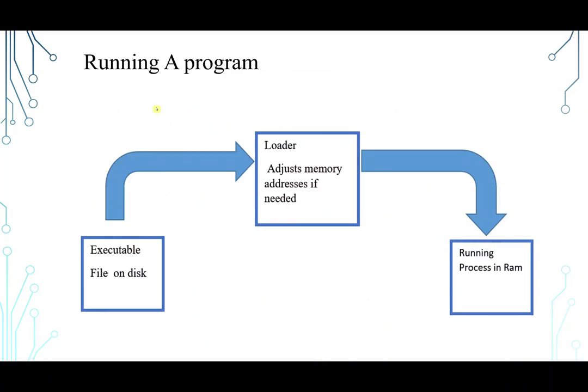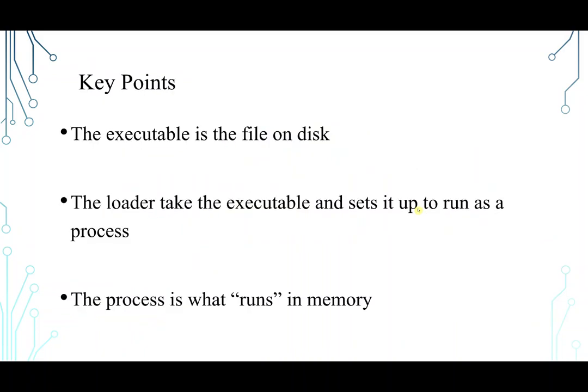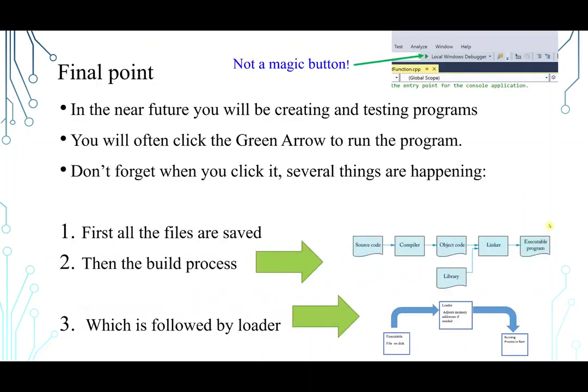Okay, having this chart is going to make it easier for you. So here is an executable file. You have it loaded. That enters the loader. The loader adjusts the memory addresses if needed and make it as a running process in RAM where, for example, the window of that application pops up and you can see, or you can deal with that window. So here are some key points. The executable file is the file on a disk. The loader takes the executable file and set it up to run as a process. The process is what runs in memory. When I say memory, I mean, again, RAM.